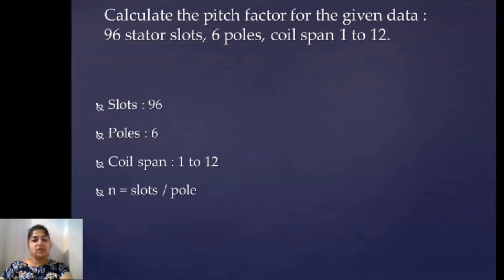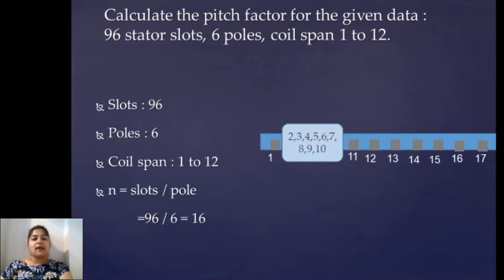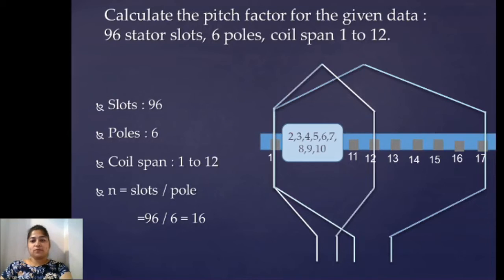N is slots per pole. Slots are 96, poles are 6, so we get N as 16. If N is 16 the full pitch coil has to be from 1 to 17. Drawing the figure with slot numbers — I have taken slots 2 to 10 in a box to save space. Keeping the full pitch coil from 1 to 17, and from the given data the shortened coil is from 1 to 12. Counting the number of slots by which the coil is shorted: 1, 2, 3, 4, 5 — so it is shorted by 5 slots.